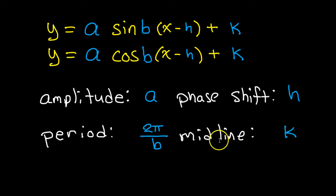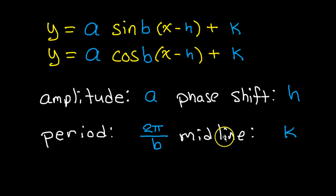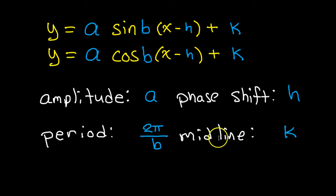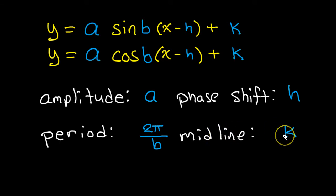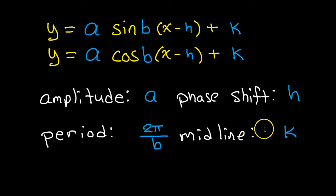And k is going to be the midline — think vertical shift. So if there's a 3 here, we'd be moving the normal graph up 3. Up k if it's positive, and down k if it's negative.